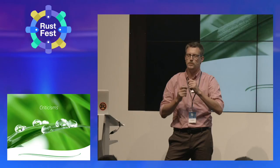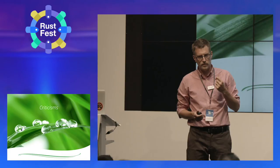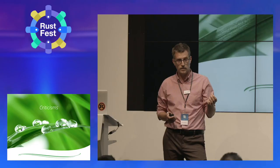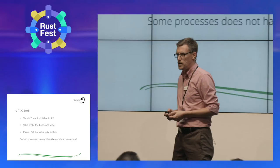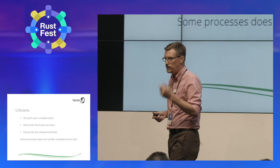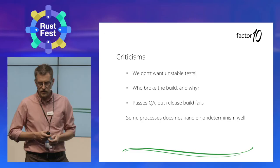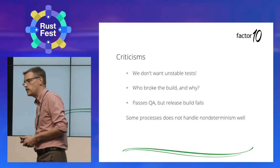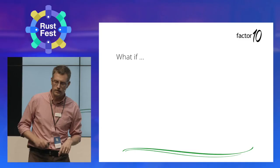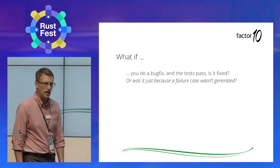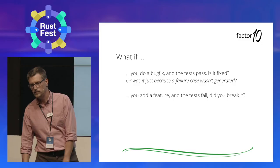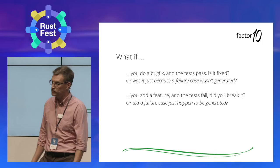If I make you excited about QuickCheck and you want to use it in your projects, you will face some criticisms. This is mainly because QuickCheck introduces randomness into your builds. People will say things like: we don't want unstable tests; we must know who broke the build; what if it passes QA and then fails the release build without any changes? These are valid criticisms — some processes don't handle randomness and non-determinism very well. On the level of an individual developer: you do a big bug fix and a test passes — is it now fixed? Or was a failure case just not generated? Or the opposite — a test failed, was that by chance?